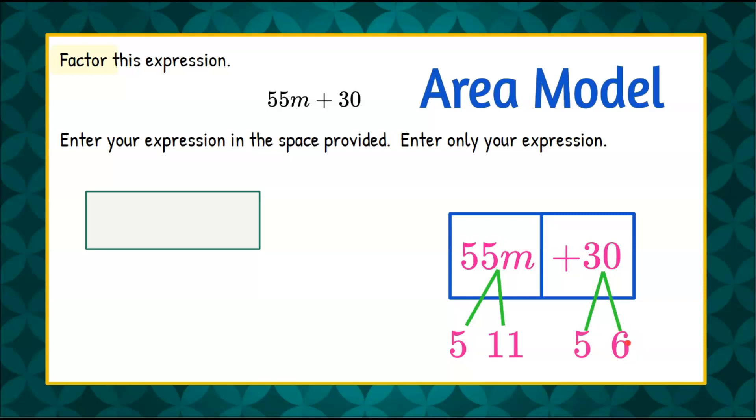So our factors here are going to be 5 and 6. So even though 6 is not prime we were looking for a common factor. 5 times 6 is 30. 5 times 11 is 55. So our common factor between the two terms is 5.